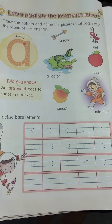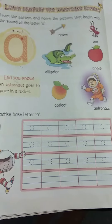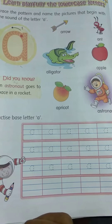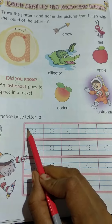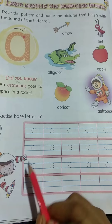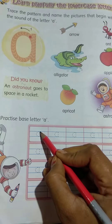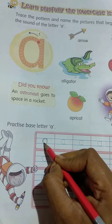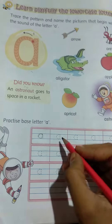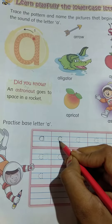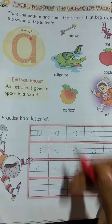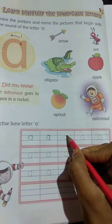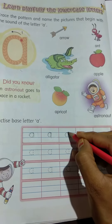Now see how to write lowercase letter 'a'. In lowercase, you have to write 'a' between two blue lines. First, make one small standing line, then a half curve — or you can make one small circle and then one standing line attached with that circle.